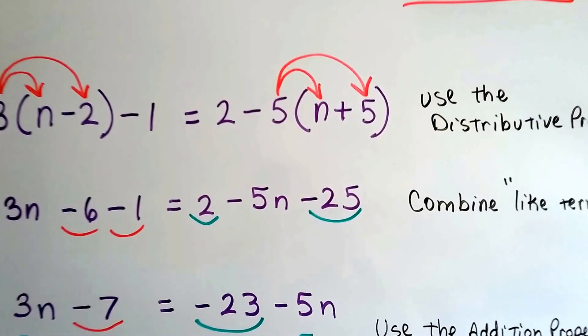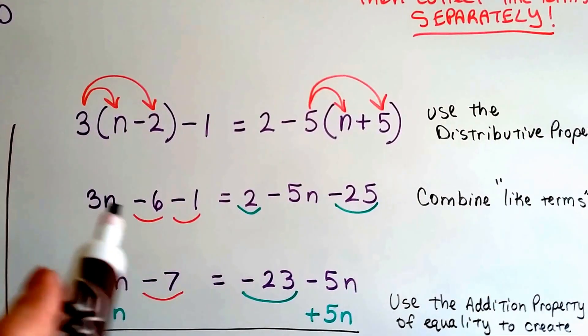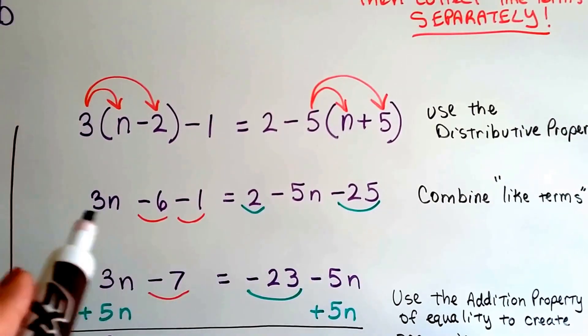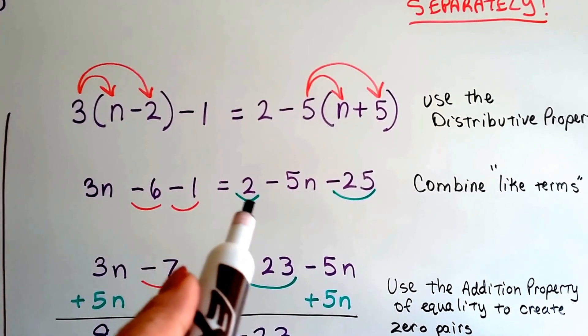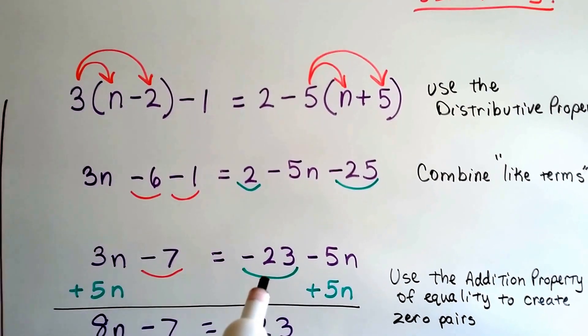So now we've got this as our equation, and we can combine the like terms. The negative 6 and the negative 1 make a negative 7, and this positive 2 and negative 25 make a negative 23.